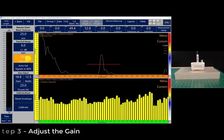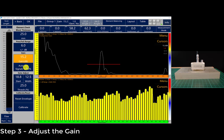Step three would be to adjust the gain so the maximum signal from the element envelope is at 80%. You are able to press auto set signals to 80% and you can see the signals across all the elements have been increased and the maximum signal on element number 55 is at 80%.